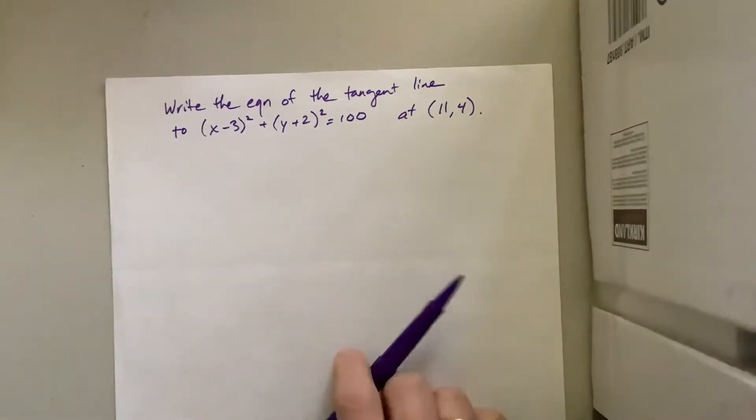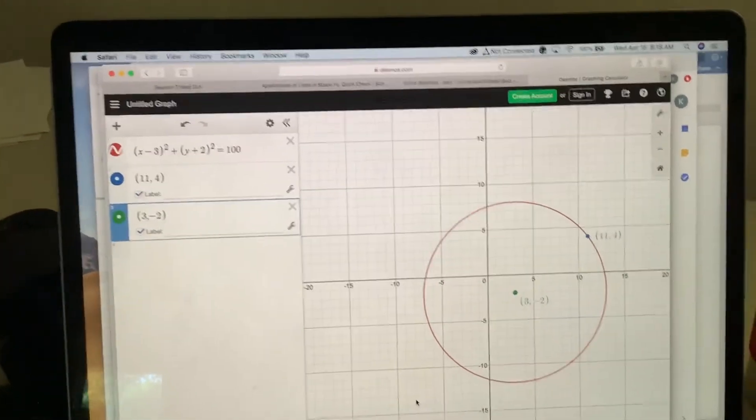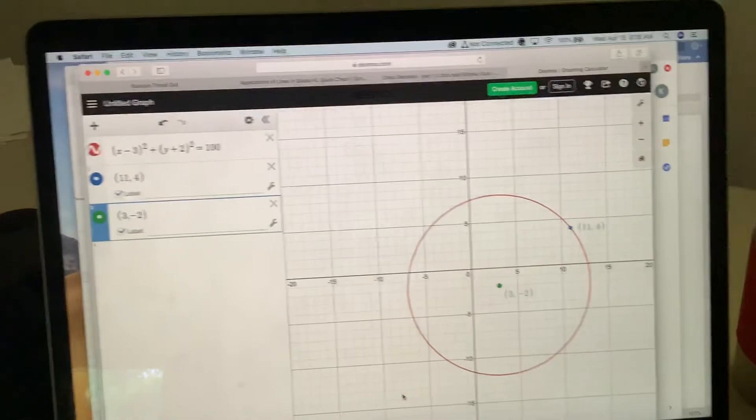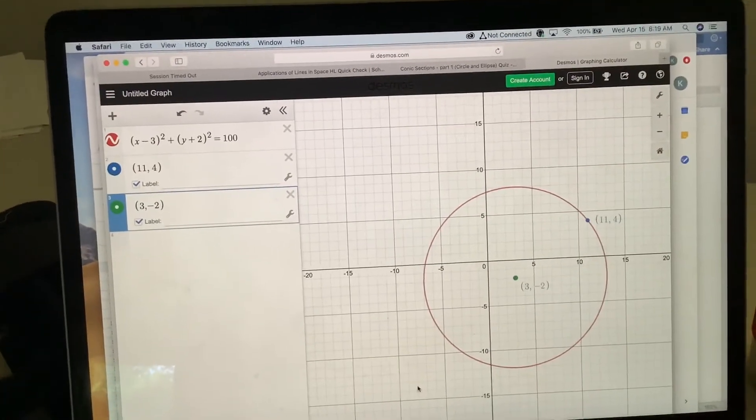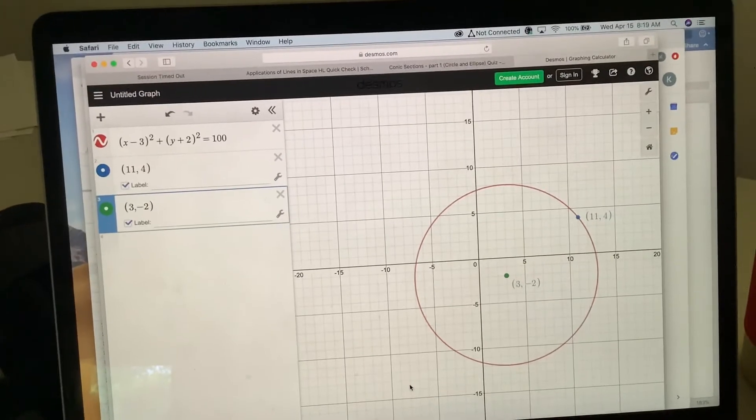What I did here, excuse me the bumpy ride for a second. I came over and I graphed it in Desmos. So you'll notice what I have there is there's the circle, there's the center. I found where the center was, and then there's that particular point. So that's what we're going to work off of.